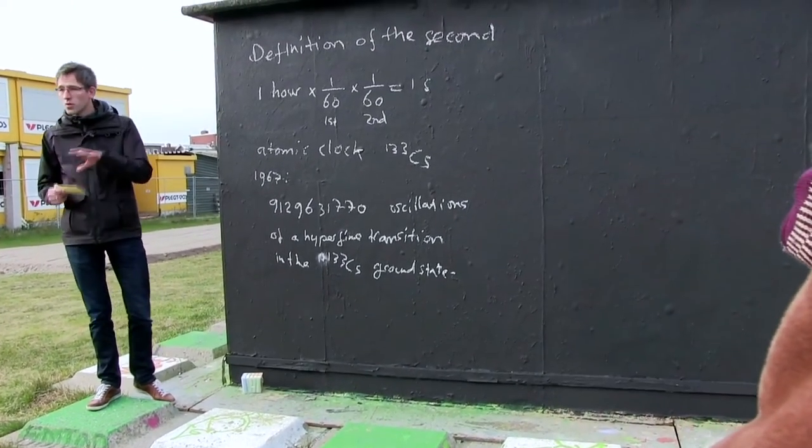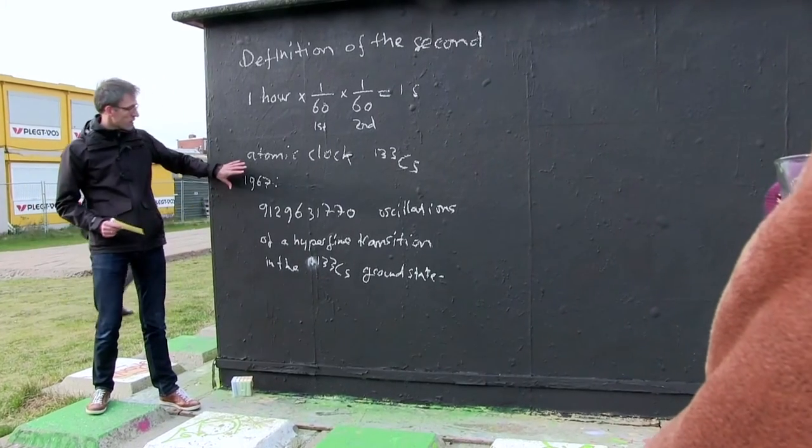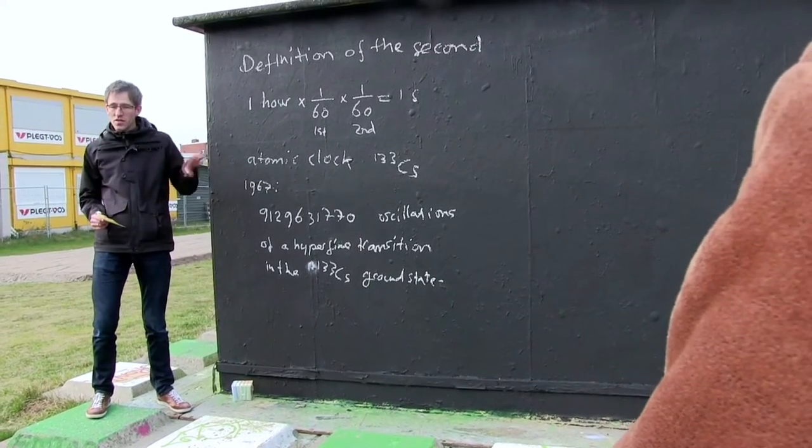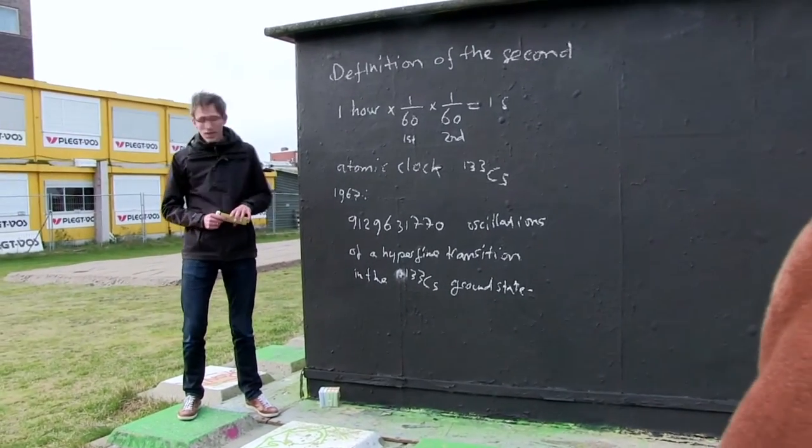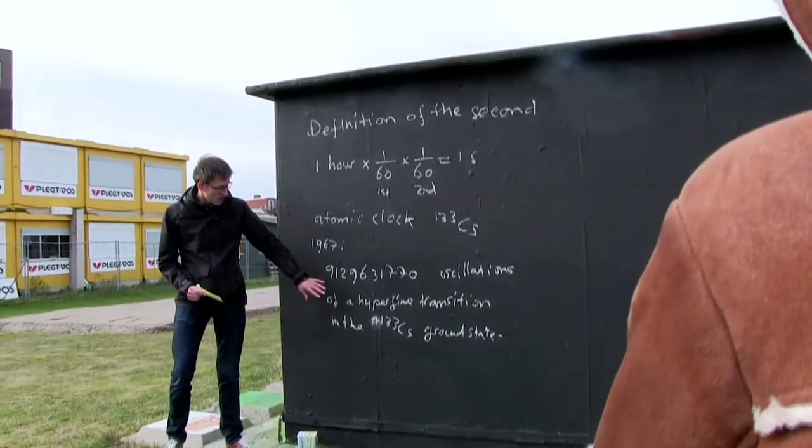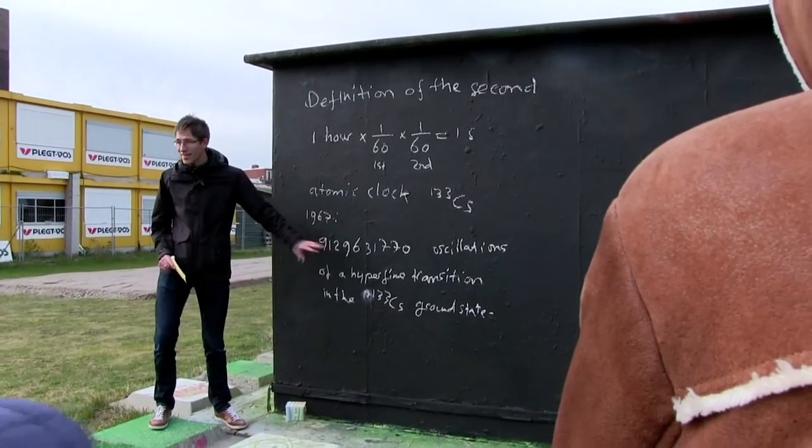We needed to get away already in the 60s or the 70s from the rotation of the earth as a unit, and we went to the definition based on an oscillation in an atom, because the atoms are always the same.